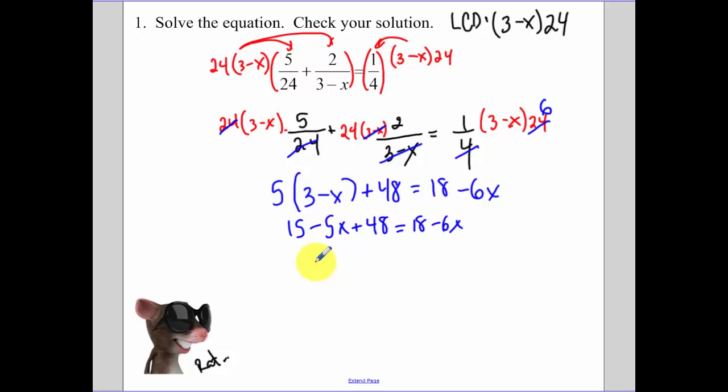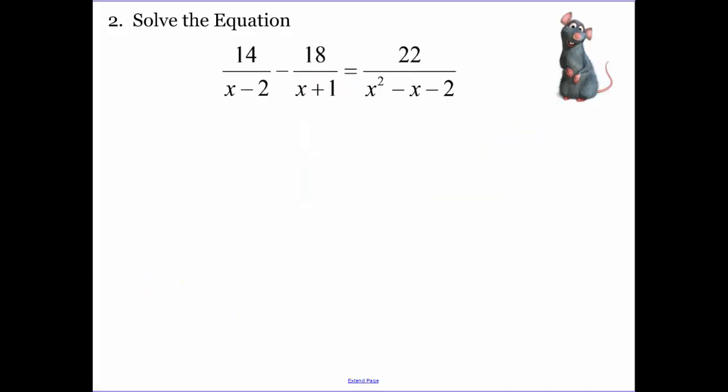I'm going to add the 6x over. So when I add the 6x over, I get 6x. When I subtract the 15 over and subtract the 48 over, we get negative 45. So x equals negative 45 divided by 5.